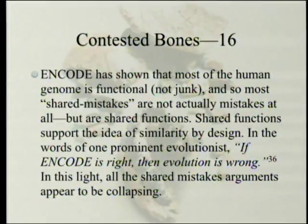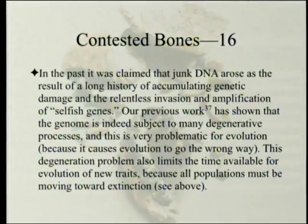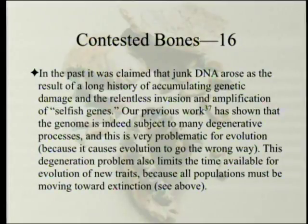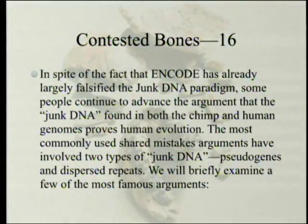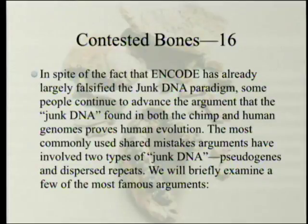In this light, all the shared mistakes arguments appear to be collapsing. In the past, it was claimed that junk DNA arose as a result of accumulating genetic damage and the invasion of selfish genes. Our previous work has shown that the genome is indeed subject to many degenerative processes, which is very problematic for evolution because it causes evolution to go the wrong way. This degeneration also limits the time available for evolution of new traits, because all populations must be moving toward extinction. In spite of the fact that ENCODE has already largely falsified the junk DNA paradigm, some people continue to advance the argument that junk DNA found in both chimp and human genomes proves human evolution. The most commonly used shared mistakes arguments involve two types of junk DNA: pseudogenes and dispersed repeats.